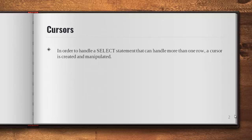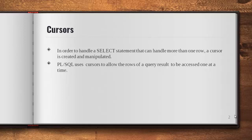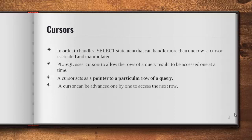PL/SQL uses cursors to allow the rows of a query to be accessed one at a time. Using a cursor, PL/SQL allows us to access the records in a table one at a time. A cursor can point to only one particular record in a table — a cursor acts as a pointer to a particular row of a query. In your table you can have any number of records, and to identify one particular record we can use a cursor.